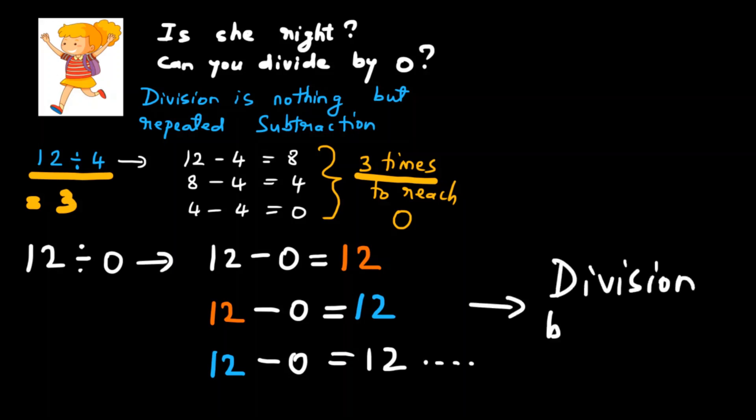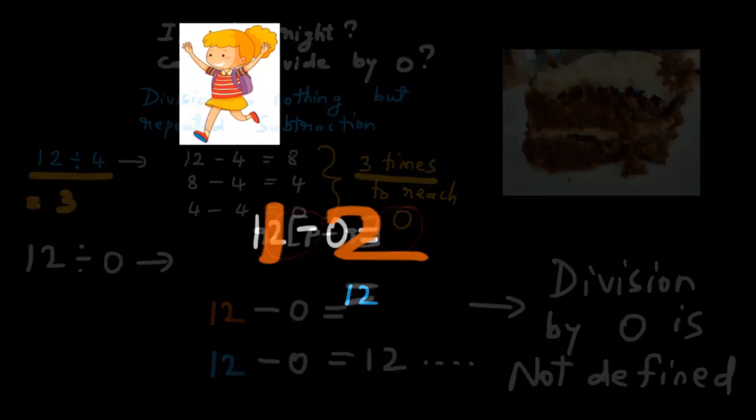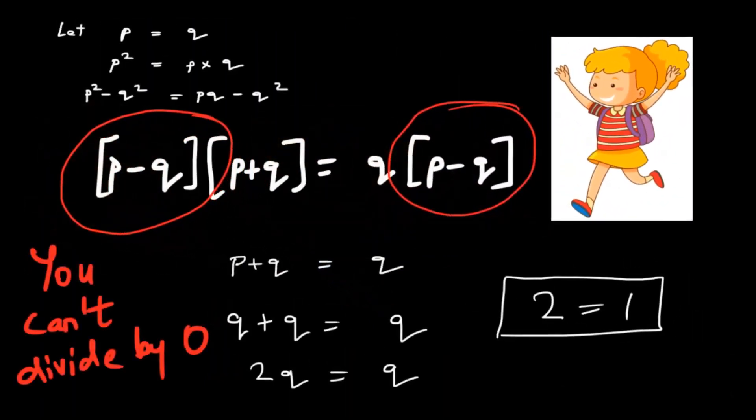Yes, you're right. Division by 0 is not defined. Now, always remember to eat cake when you are stuck in a maths problem because that's what helped Anna solve the mystery of the proof 2 is equal to 1.